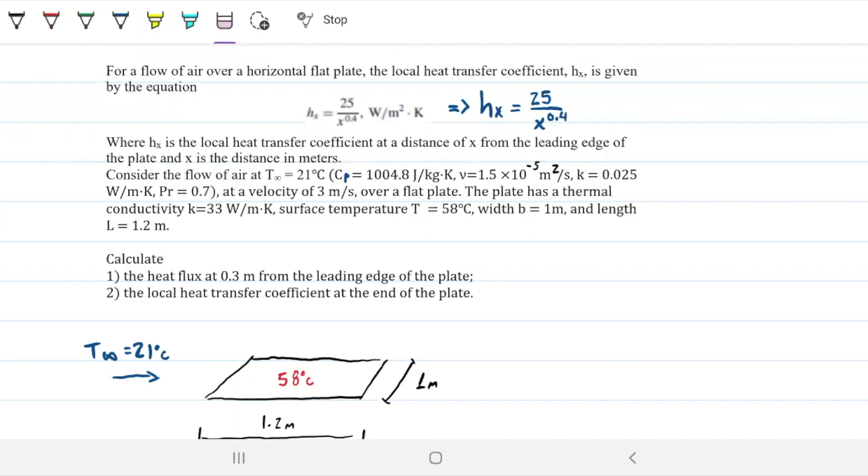For a flow of air over a horizontal flat plate, the local heat transfer coefficient Hx is given by the equation Hx equals 25 over x to the 0.4, where Hx is the local coefficient and x is the distance from the leading edge of the plate in meters.